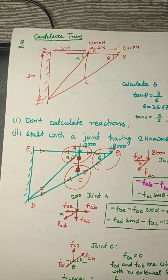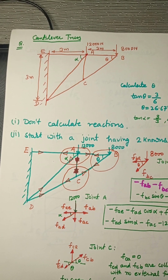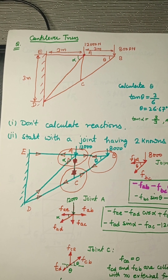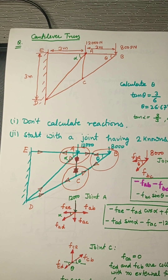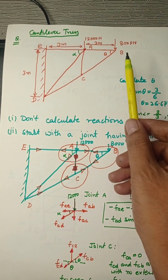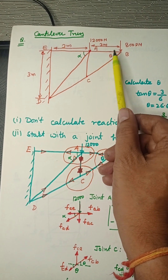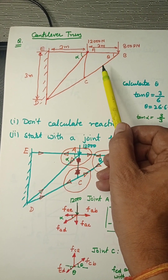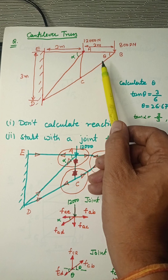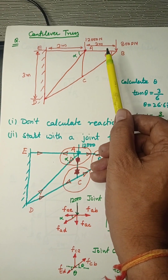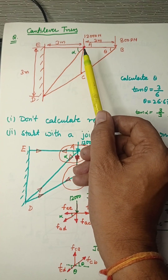Instead, try to find a joint which has two unknowns, or two members meeting at a joint. You can see this is joint B, where two members are meeting. So we can start the method of joints from joint B, then go to joint C and joint A.